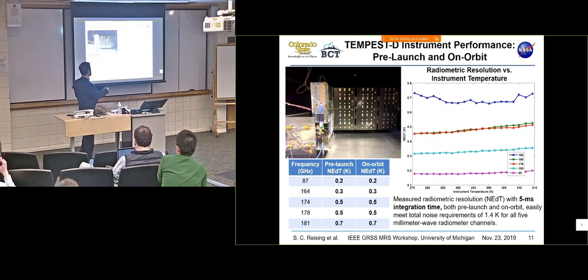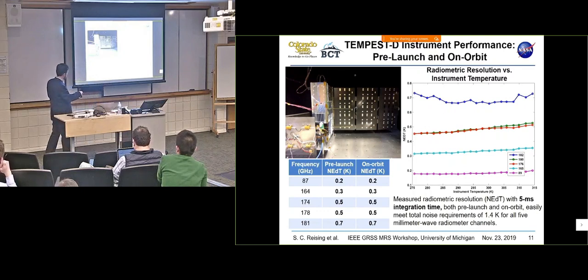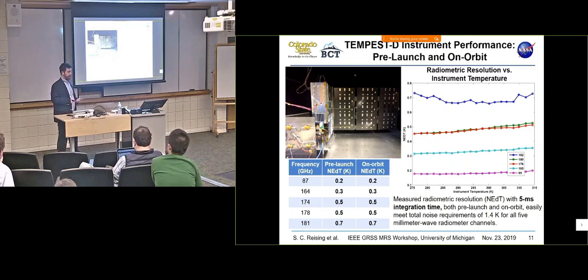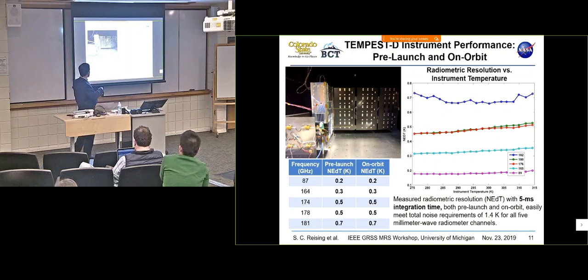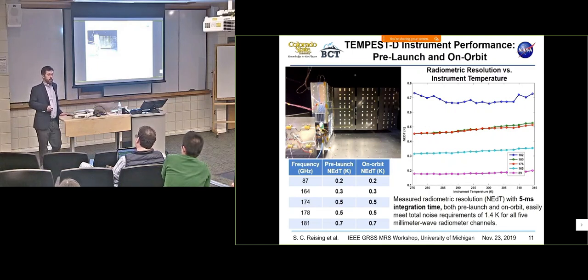In thermal vacuum we swept it over the temperatures that we would be observing on orbit and more. And we found that the noise characteristics, the noise behavior is very flat with frequency. So these five frequencies, this is any delta T, the smallest signal that you can reliably measure. And the units are Kelvin, so it's a power scale to Kelvin like we do in radiometry. The radiometric resolution is 0.2 to 0.7 Kelvin over these five channels.